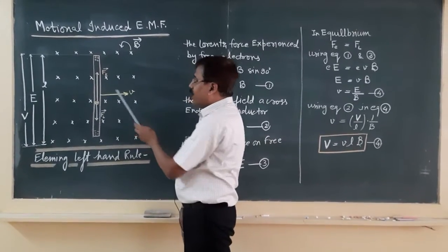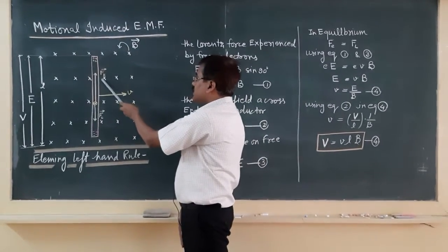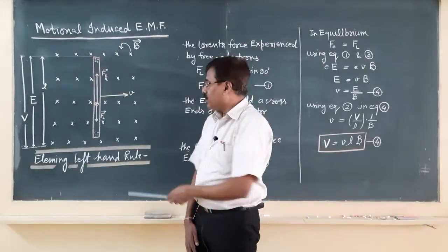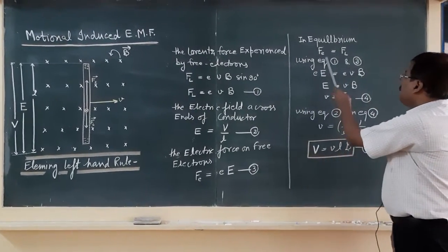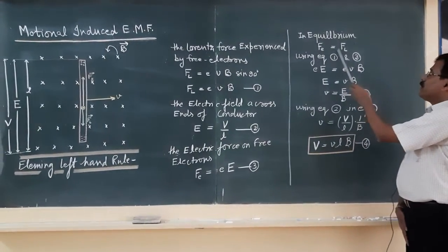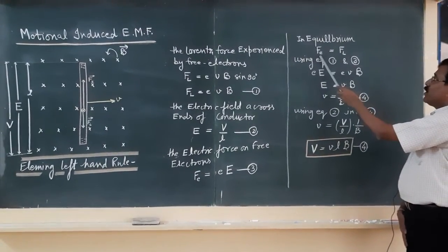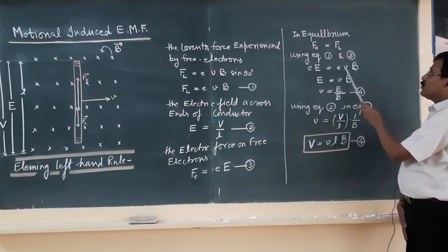It means every free electron is experiencing two forces: one electric force and the second Lorentz force. So, in equilibrium you can say that F_E equals F_L; equilibrium means the free electron is in the equilibrium position. So, if you put the value of F_E and F_L, that is eE equals evB.